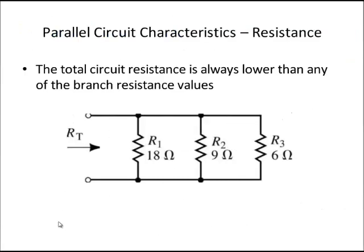Here's a very helpful hint: whenever you calculate the total resistance of a parallel circuit, RT will always be lower than the lowest resistor value in the circuit. In other words, if we calculate RT for these three resistors, it must be lower than 6 ohms. As we will calculate shortly, it comes out to 3 ohms, which is definitely lower than any individual value.